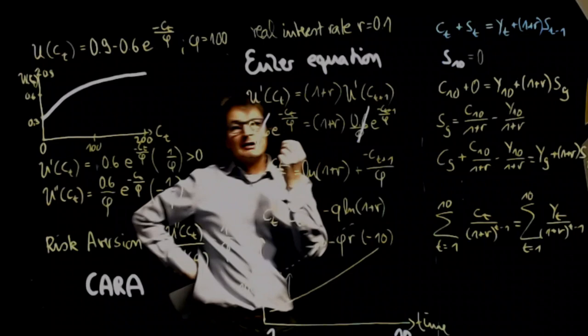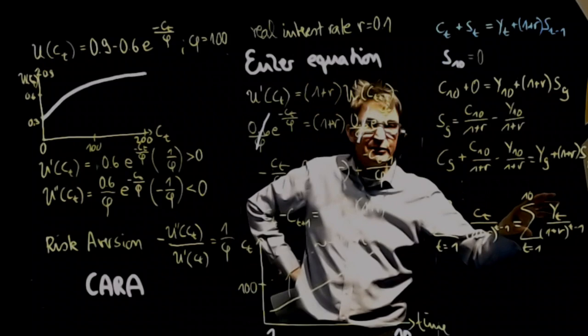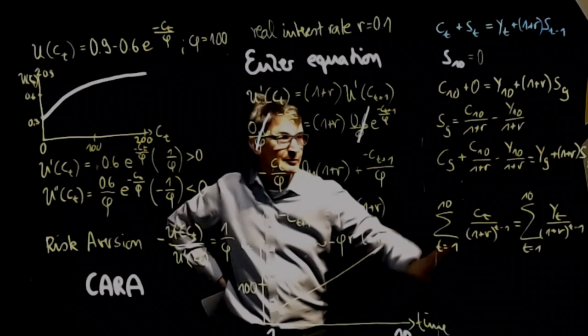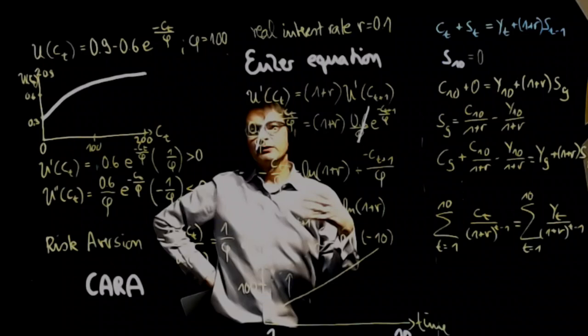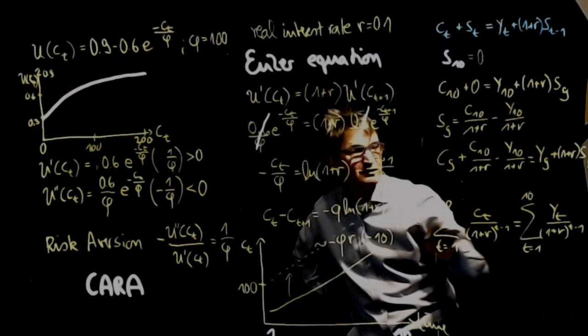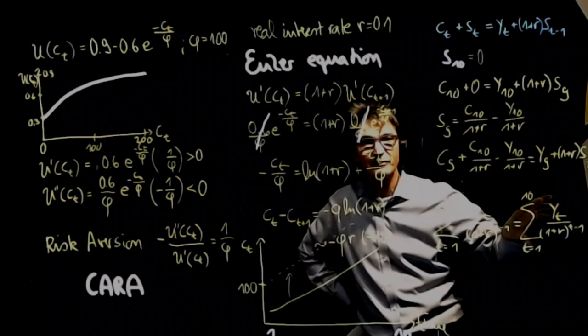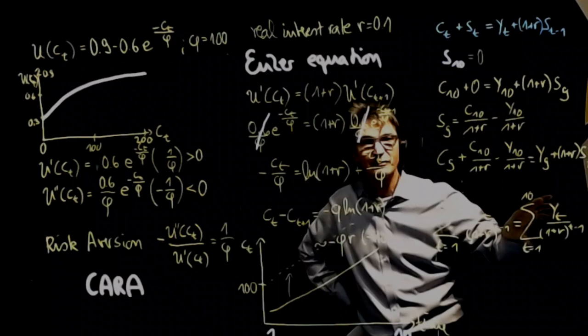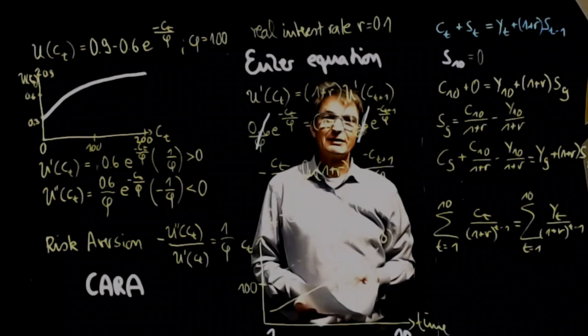And the nice feature of this is that it does not matter when your income rises. If you get all your income just in round 1 and nothing thereafter, but if that is of the same present value, then you have the same consumption path. Likewise, if you get all your income just in round 10, then also if that has the same present value, it's the same consumption path. So much for today. Thank you for your attention.